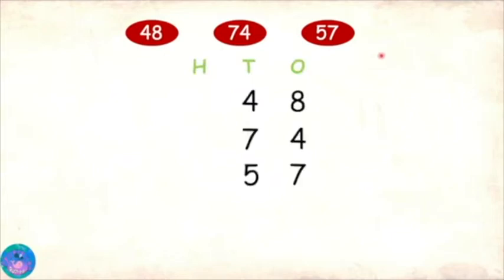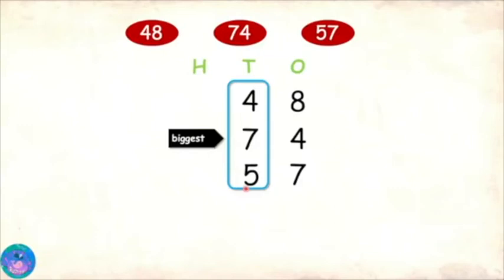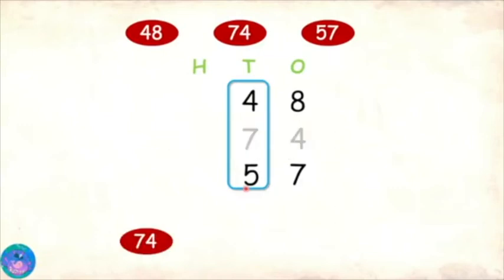To compare these numbers we can arrange them one under the other according to place value. The tens place is the biggest place that has digits, so we'll start comparing from the tens place. We have 4, 7, and 5. Since we need the biggest number first, 7 is the biggest, so 74 is the biggest number.